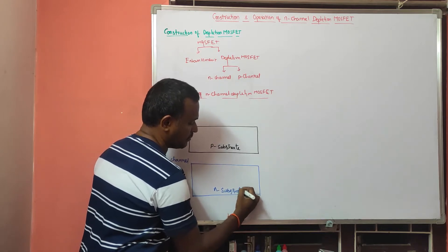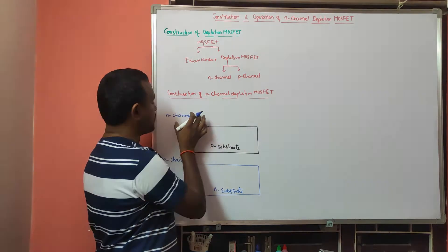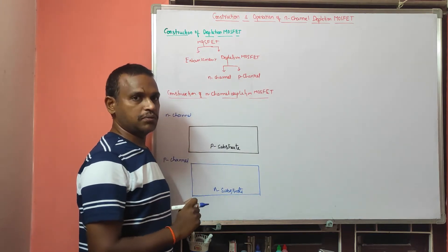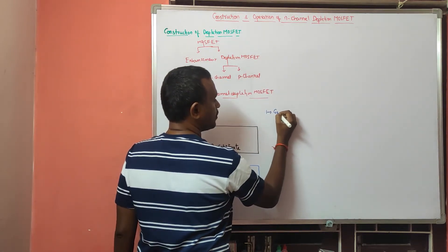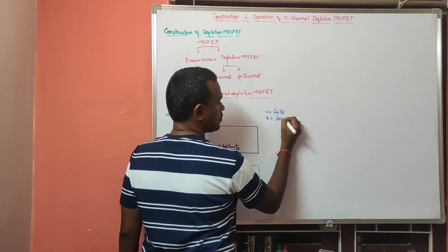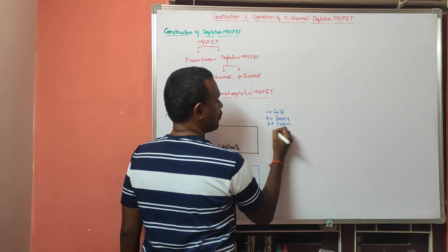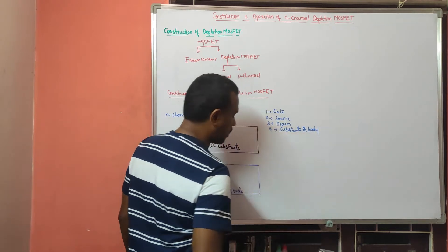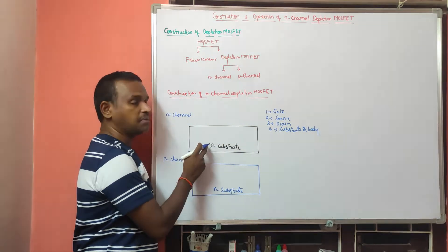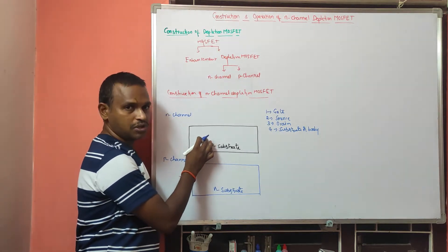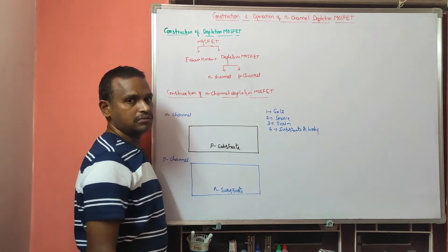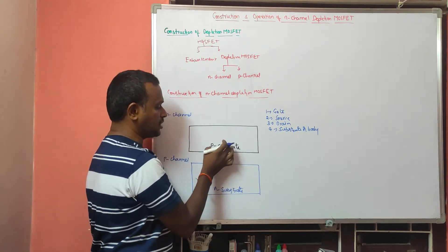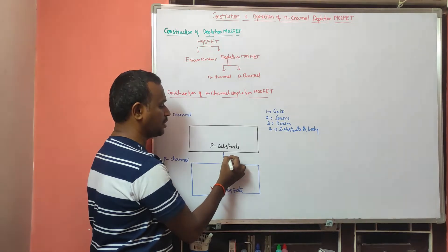In general, for any MOSFET — both depletion and enhancement — there are four terminals: gate terminal, source, drain, and the fourth one is substrate or body terminal. For N channel, we start with a P substrate, and on this substrate we form the gate, source, and drain terminals. The fourth terminal is the substrate terminal.